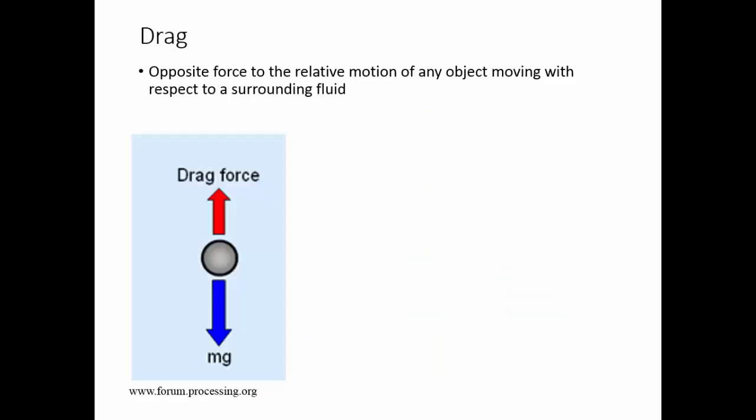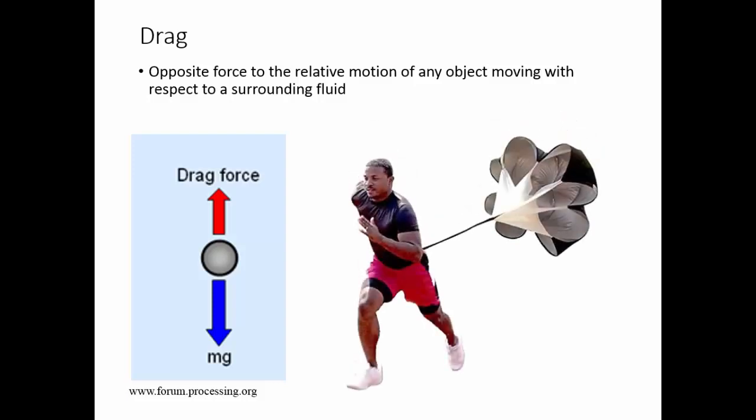In this image you can see a steel ball which is put into a fluid, say water. As the ball moves downwards, the drag force acts towards the upward direction resisting the downward motion. Similarly, here is another example: a person running with a resistance parachute. The resistive drag force is opposite to the direction of its motion.